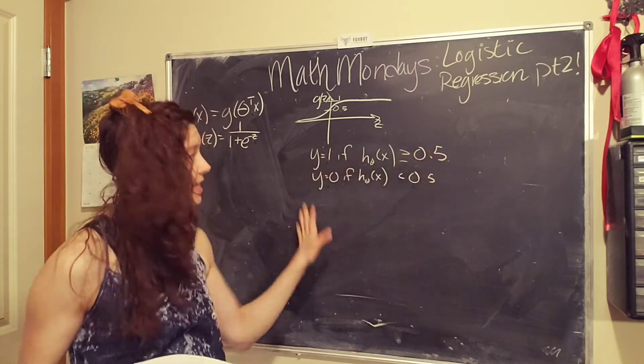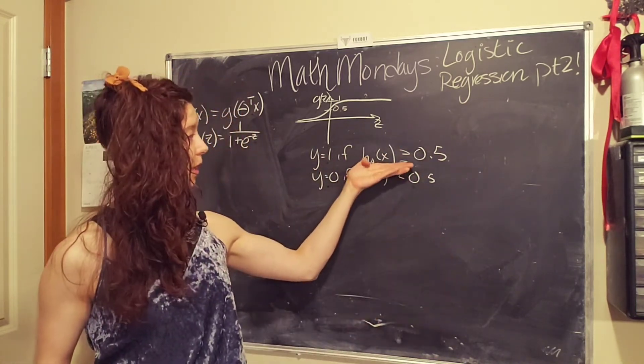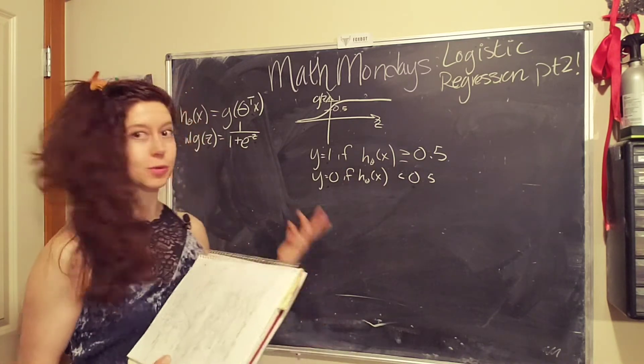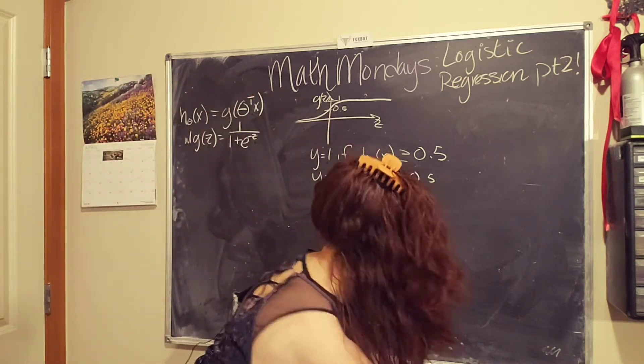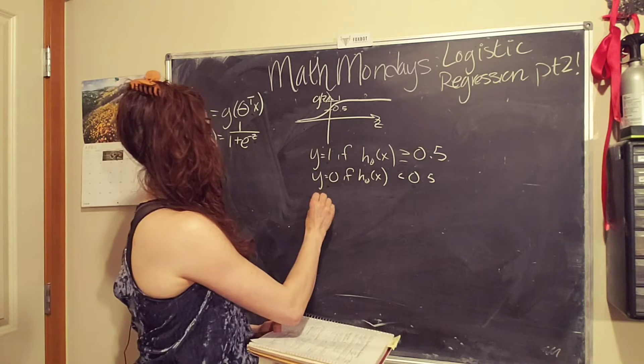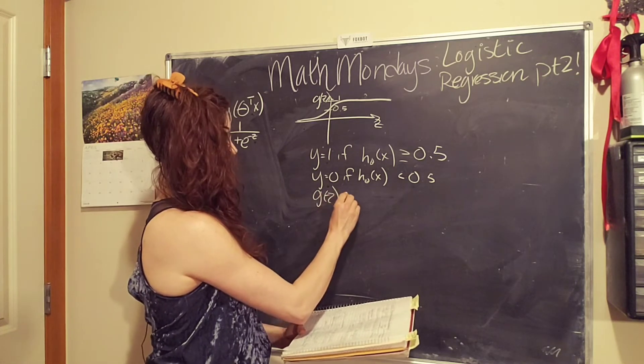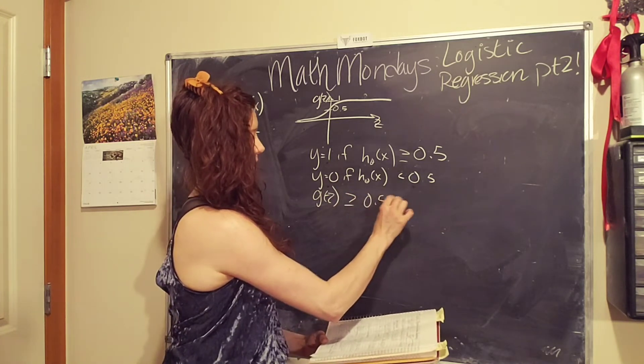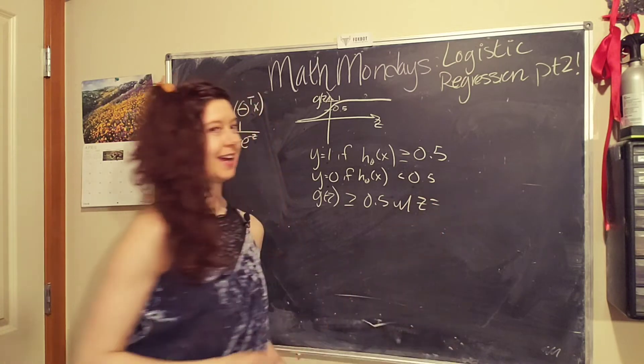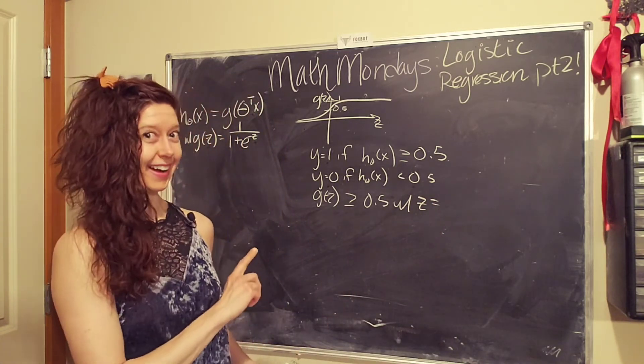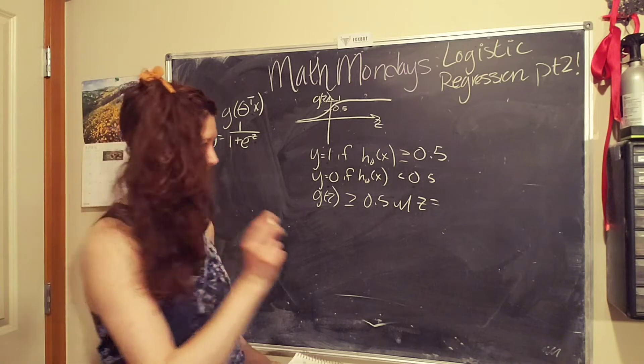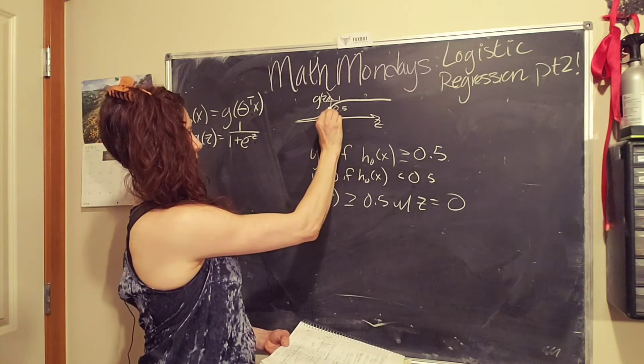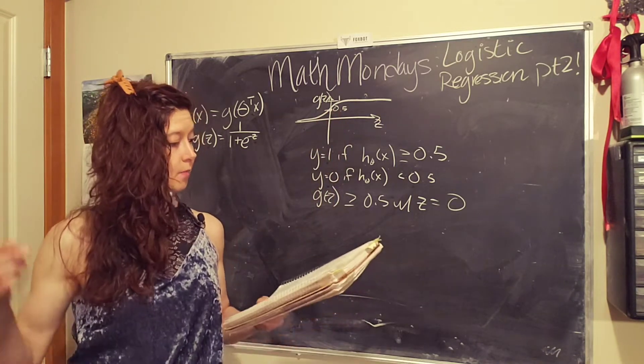So when does this happen? When does our hypothesis function equal 0.5? So we look at our plot for that. Yay, pictures! So, our sigmoid function, g of z, is greater than 0.5 when z equals, hey, look at the picture, what do you think? Yeah? Yeah, when z equals zero. Woo! So when we have z equals zero, we have our sigmoid function is equal to 0.5. Okay, cool.